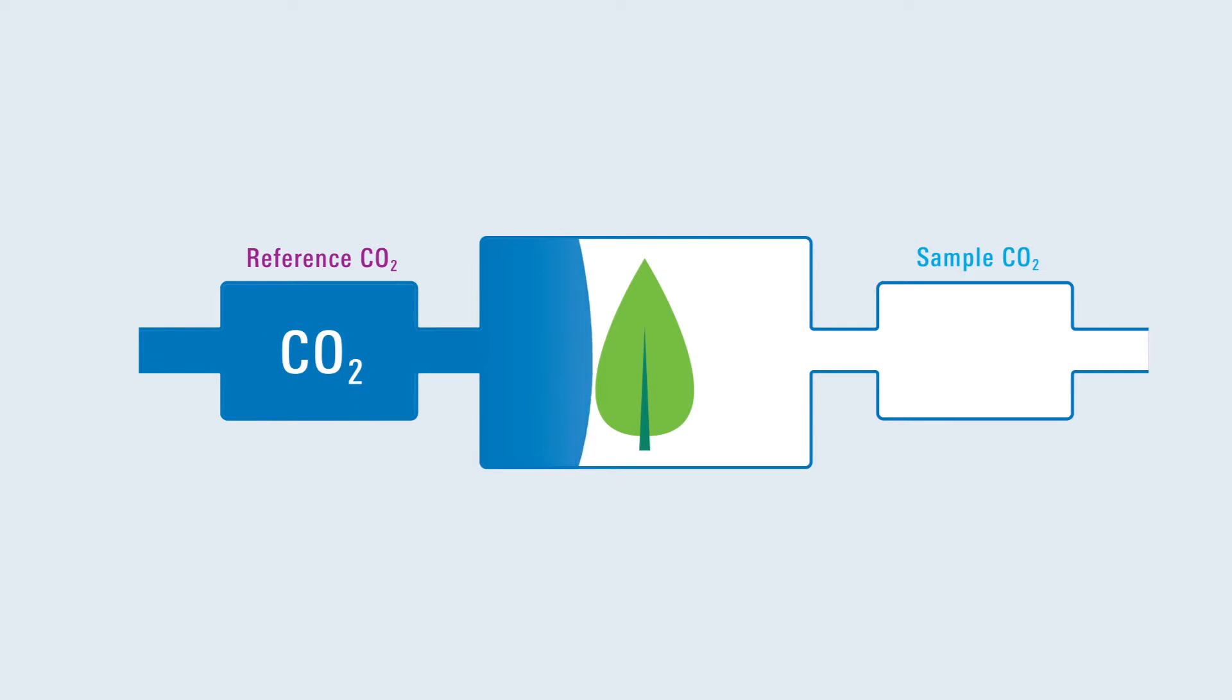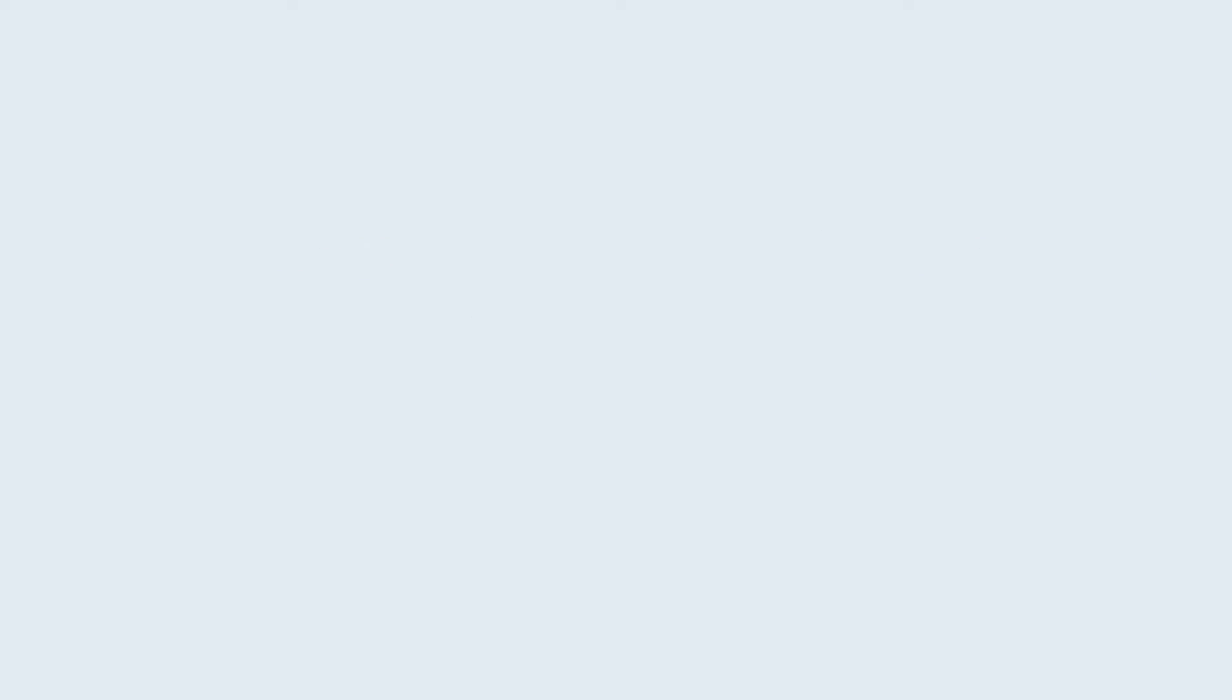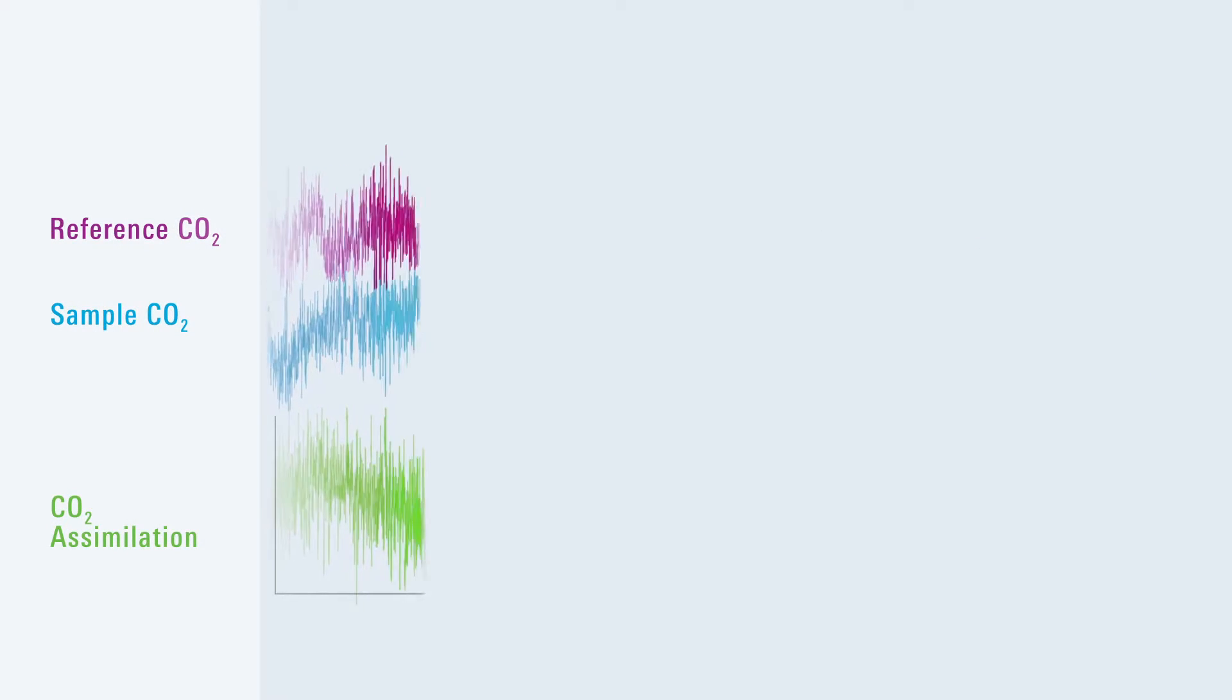But a photosynthesis measurement is more than just a number. It is an estimate, computed from many measured parameters, each of which has a range of variation.